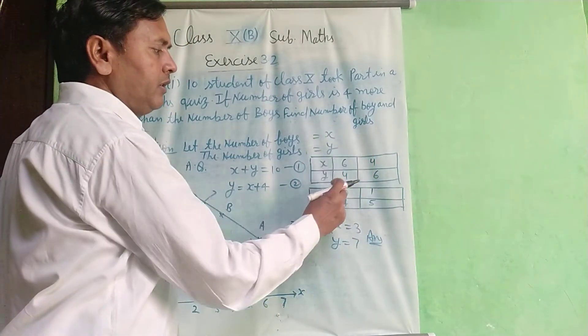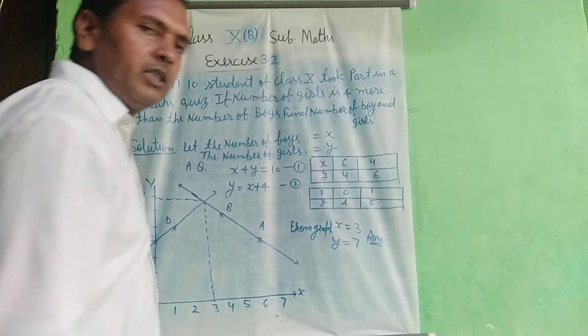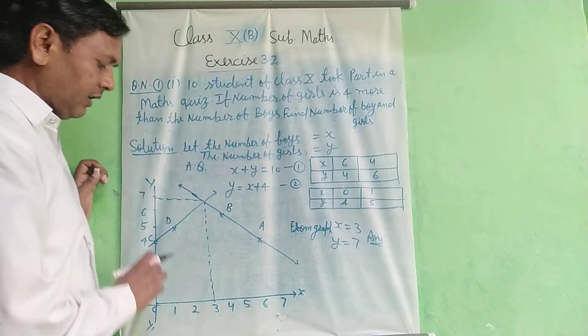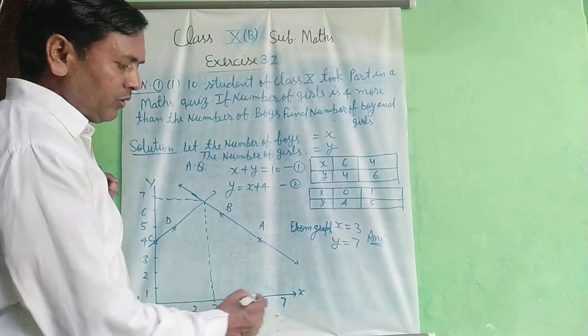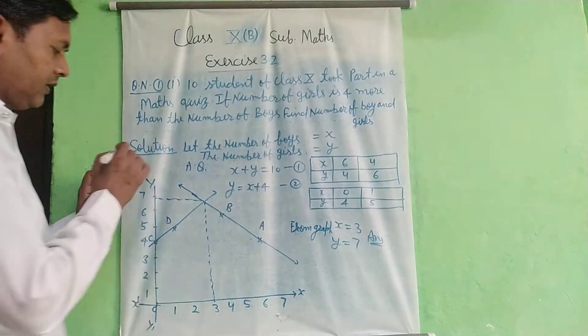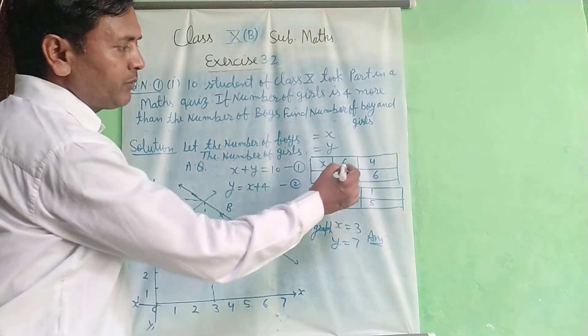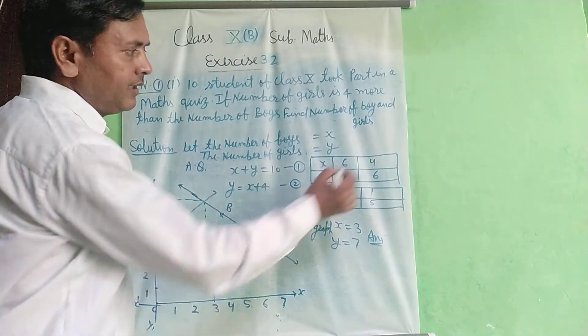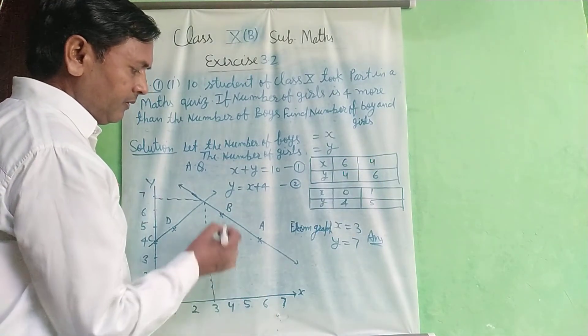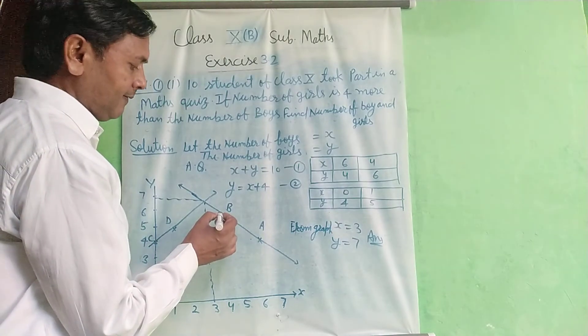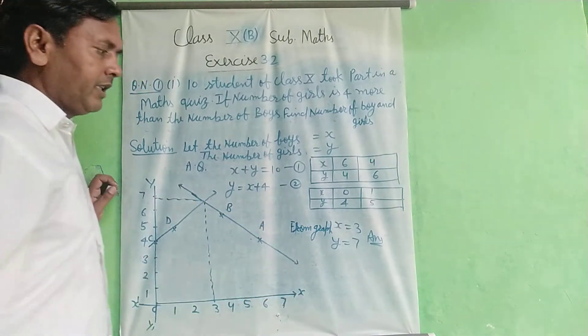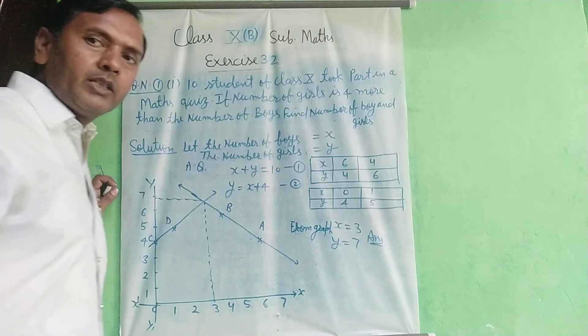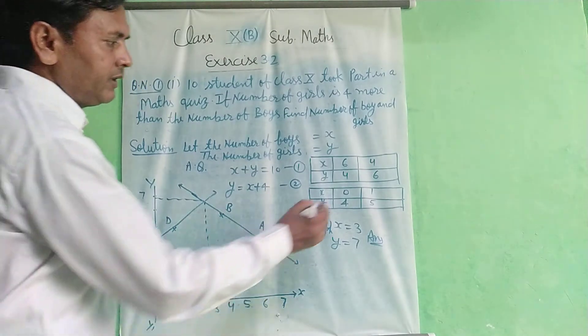So 4 points A, B, C, D. Represent in graph, x axis, y axis. Plot the points: (6, 4) and (4, 6) for the first equation.